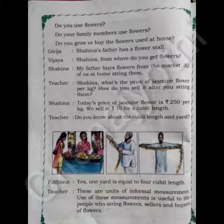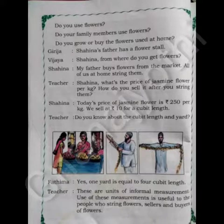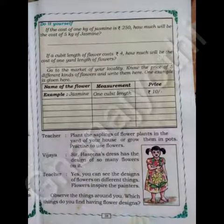Do it yourself, children. If the cost of 1 kg of jasmine is rupees 250, how much will be the cost of 5 kg of jasmine? Write it in your textbook. If a cubit length of flowers costs rupees 4, how much will be the cost of 1 add length of flowers?